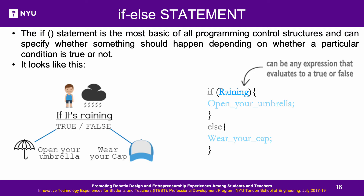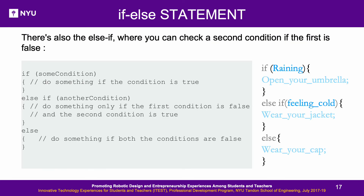If-Else with multiple conditions: Basic if-else can be extended with multiple else-if conditions to check and validate multiple conditions. Using the rain analogy: if it is raining, open your umbrella; else if it is cold weather, wear your jacket; if it is neither raining nor cold, wear your cap.